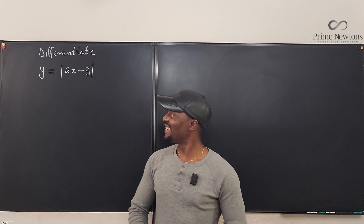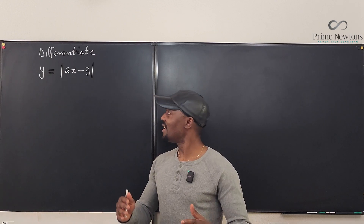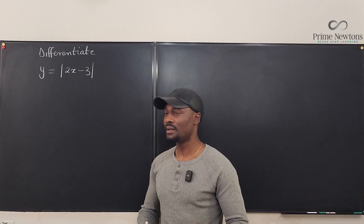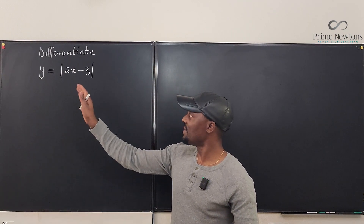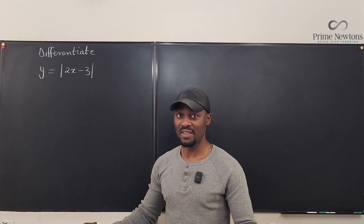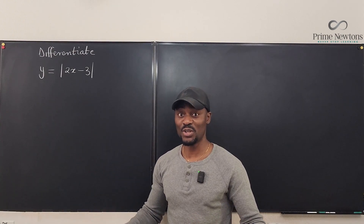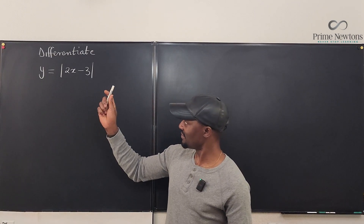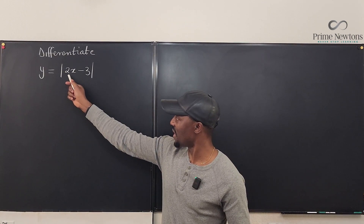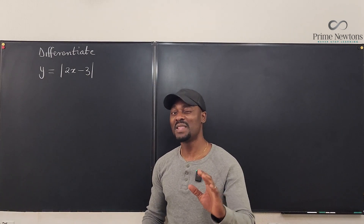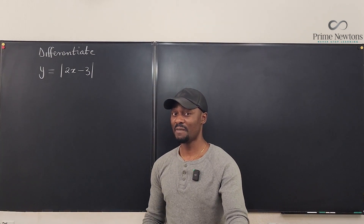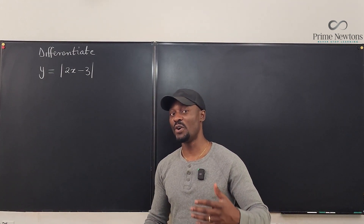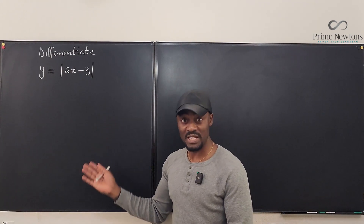Welcome to another video. Let's try to differentiate y equals the absolute value of 2x minus 3. Remember that if the absolute value signs were not there, this is the easiest differentiation you can perform — the answer would just be 2, going to zero and leaving 2. But that's not the answer to this one. It's not minus 2 either — it's something completely different from what you may be thinking.